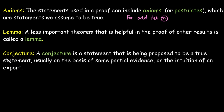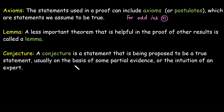The next word is conjecture. A conjecture is a statement that is proposed to be true, usually on the basis of some partial evidence or the intuition of an expert. It is a statement we assume to be true based on partial evidence or expert intuition, although a proof is not yet available.